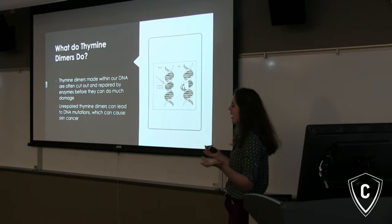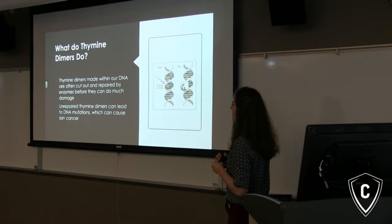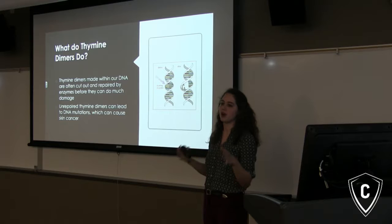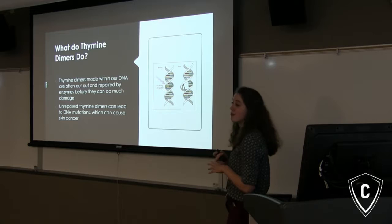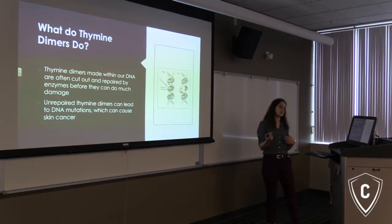So what do thymine dimers do, and why do we really care about them? As you can see in the DNA here, when thymine dimers are formed, they cause these lesions — kinks in our DNA — so they're not able to be read correctly. Normally thymine dimers are cut out and replaced by new thymine molecules, so they don't typically cause a lot of problems. However, unrepaired thymine dimers can lead to problems in DNA replication and transcription, which can lead to DNA mutations, which can subsequently lead to skin cancer. That's where you see the connections between UV irradiation and the incidence of skin cancer.